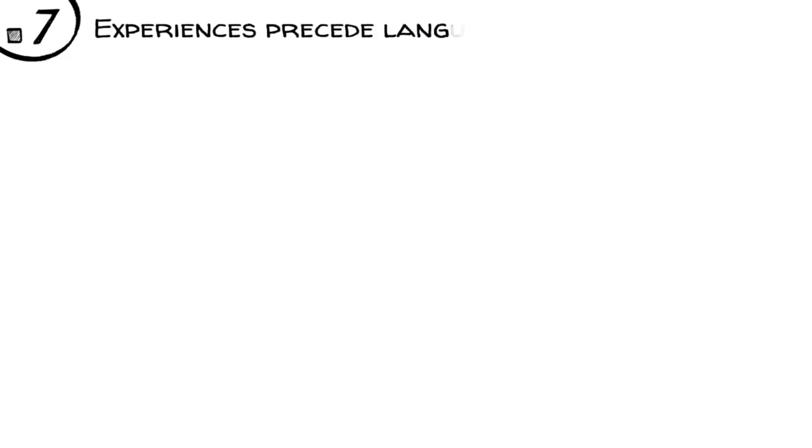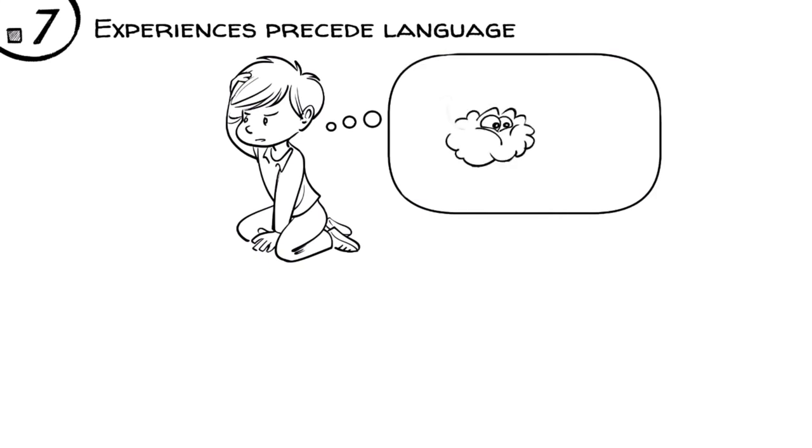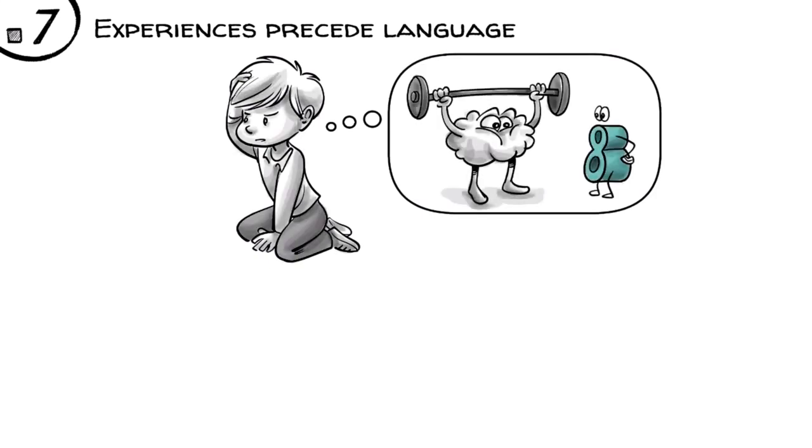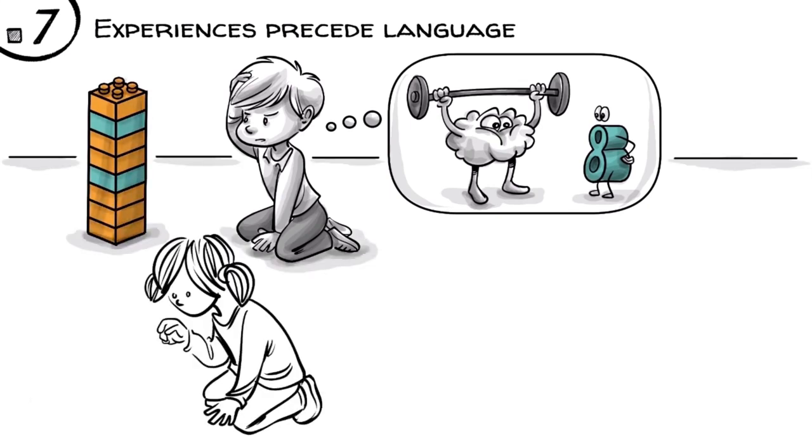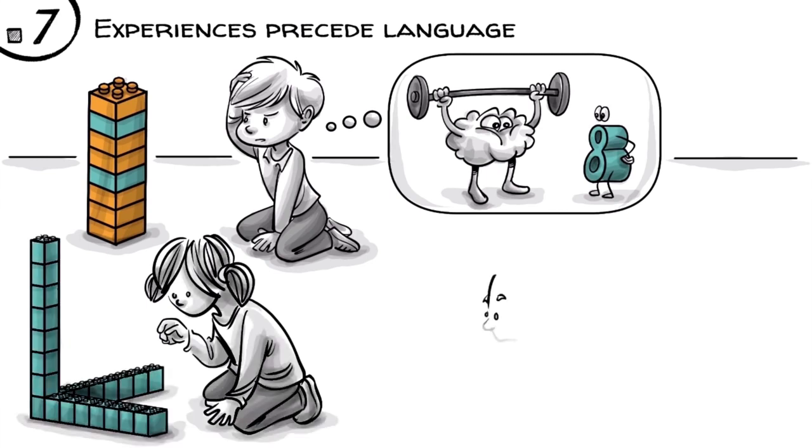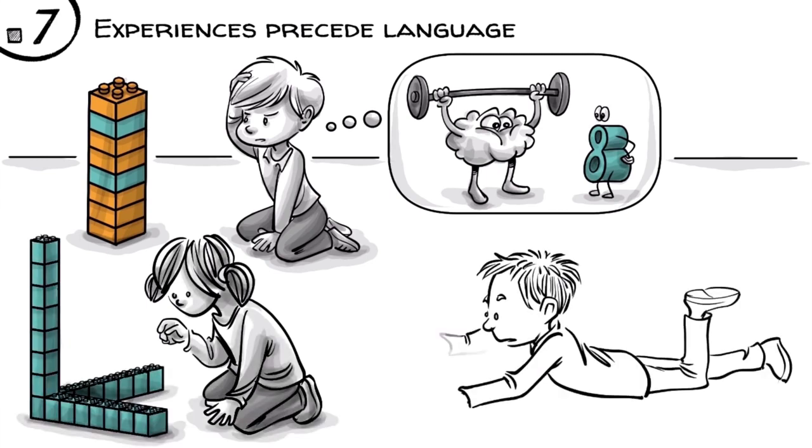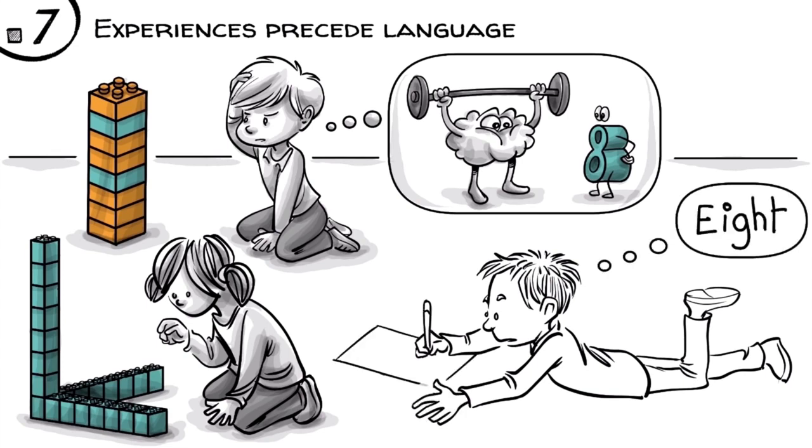Experiences precede language. As we demonstrated, it takes a child a lot of mental training and hands-on experiences to form the concept of a number. At the age of five, we can build a simple row of eight, later form eight square then eight root. Only once we have constructed number concepts inside our heads, can we effectively learn how to express them with images, symbols and language.